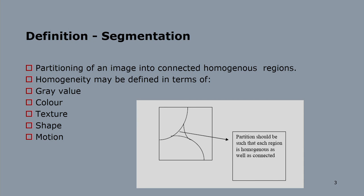Image Segmentation is the partitioning of an image into connected homogeneous regions. The homogeneity may be defined in terms of grey value, colour, texture, shape, and motion. For example, if I consider colour, in one portion the colour is almost the same — that means it is homogeneous. Similarly, in another region, the colour is also almost the same, so it is homogeneous. Based on grey value, colour, texture, shape, and motion information, I can do image segmentation.